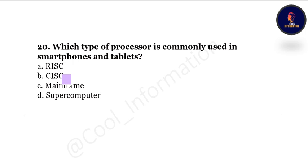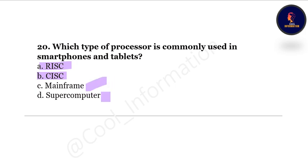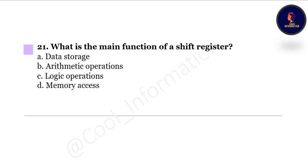Question 20: Which type of processor is commonly used in smartphones and tablets? Option A: RISC, Option B: CISC, Option C: mainframe, Option D: supercomputer. The correct option is RISC — this is the processor used in smartphones and tablets.